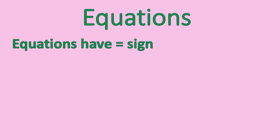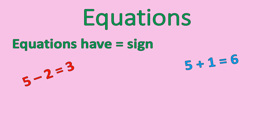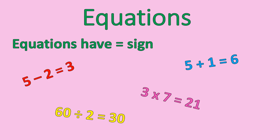So let's talk about equations real quick. Equations have an equal sign — that's basically what makes an equation an equation. Here's an example: 5 plus 1 equals 6. Notice there's an equal sign in there. The left side is equal to the right side. 5 minus 2 is 3 — again, the left side is equal to the right side. You have that equal sign in between. 3 times 7 equals 21, and 6 divided by 2 equals 3. Make sure that all the operations are represented there. So that's what an equation is, and here are some examples of what equations look like.